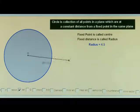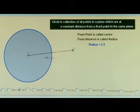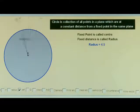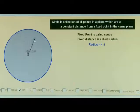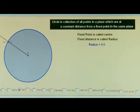Now let me take it outside. When the point R is outside, the distance OR — that means the distance of the point R from the center — will be greater than the radius of the circle. It is obvious from the figure: as long as the point is inside, the distance is less than 4.5; when it is outside the circle, the distance from the center is more than the radius.